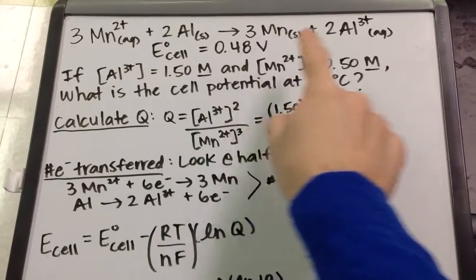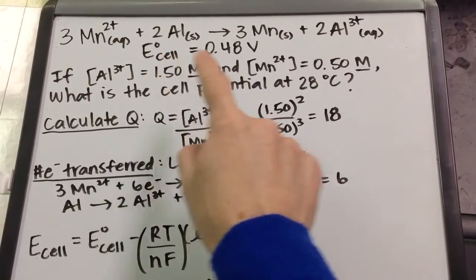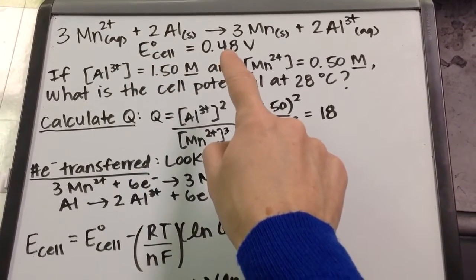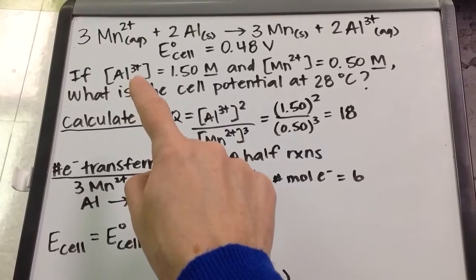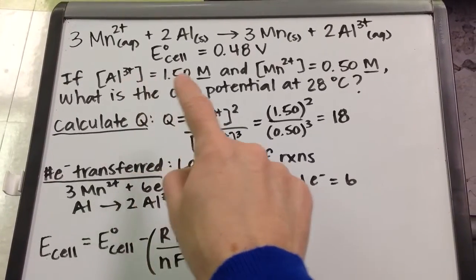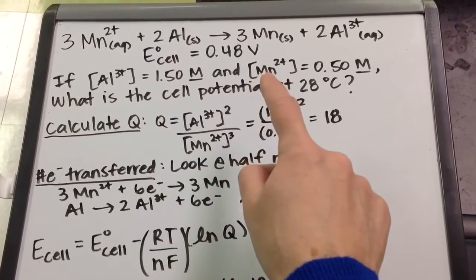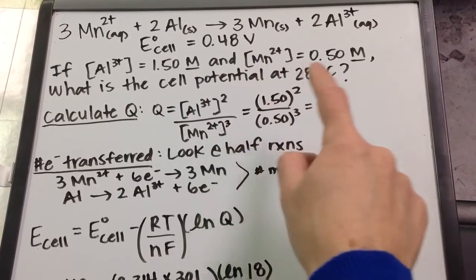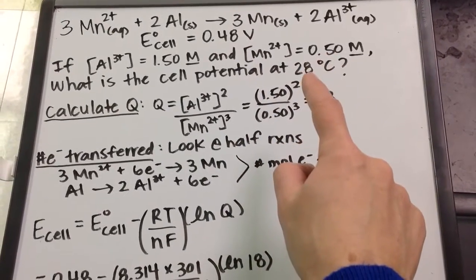So given this reaction, here's the value of E-cell under standard conditions: 0.48 volts. If the concentration of Al³⁺ is 1.5 molar and the concentration of Mn²⁺ is 0.5 molar, and the temperature is 28 degrees Celsius,